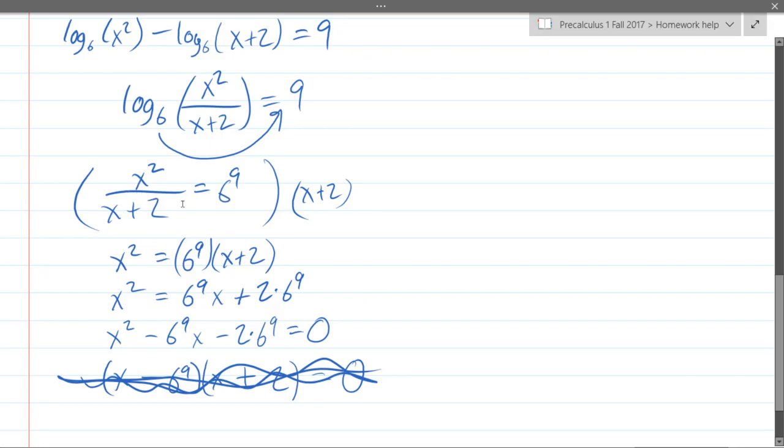6 to the 9th is 6 times 6 to the 8th, which is 2 times 3 times 6 to the 8th. Complete the square. Apologies in advance if this gets ugly. Of course, what's the other option? The other option is the ugliest option, which is quadratic formula. You can definitely do that. Complete the square: x squared plus bx equals x plus b over 2 squared minus b over 2 squared.